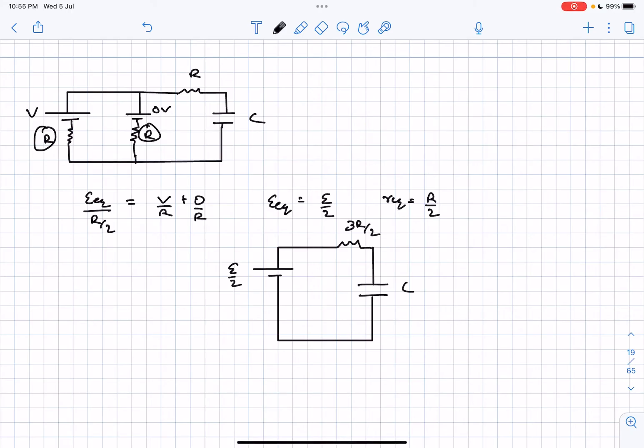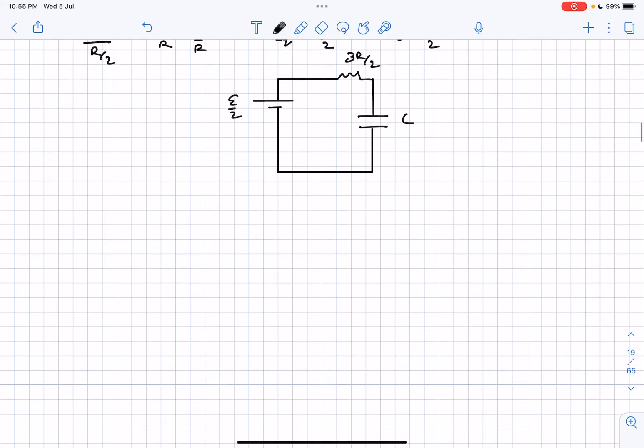Now this is a simple RC circuit which is getting charged. The charge as a function of time for a simple RC circuit is Q naught, the maximum charge on the capacitor, times 1 minus e to the power minus t by tau.